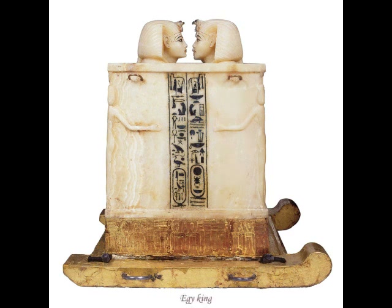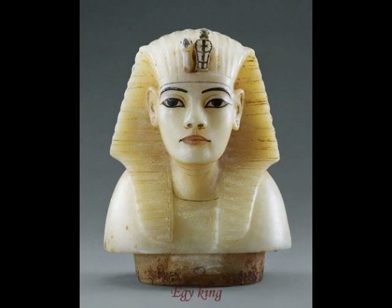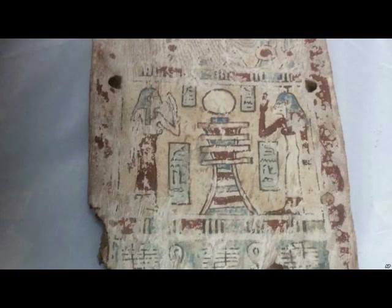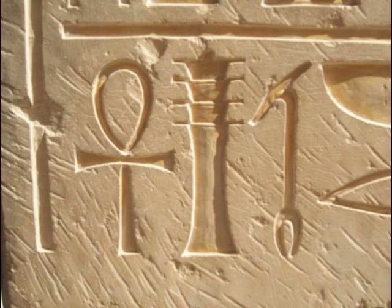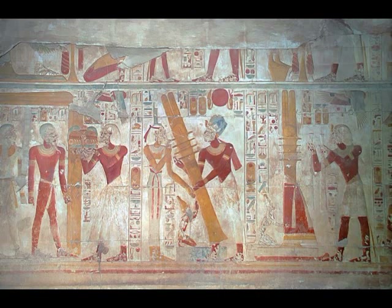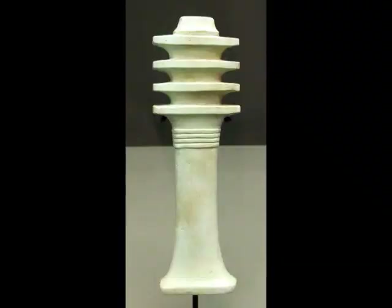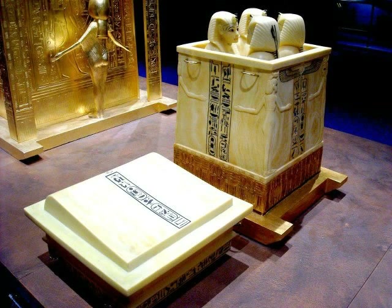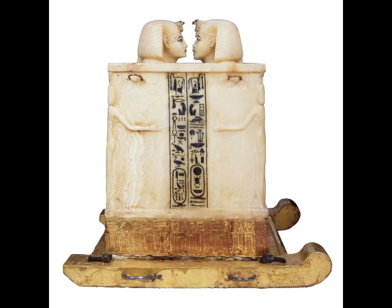The Djed was thought to represent the god's backbone and frequently appears on the bottom of sarcophagi in order to help the newly arrived soul stand up and walk into the afterlife. The symbol has also been interpreted as four columns rising behind each other, the tamarisk tree in which Osiris is enclosed in his most popular myth, and a fertility pole raised during festivals. In the interpretation of the symbol as four columns, the number most frequently appearing in Egyptian iconography is represented: four. The number symbolized completeness and is seen in art, architecture, and funerary goods such as the four sons of Horus on the canopic jars, the four sides of a pyramid, and so on.